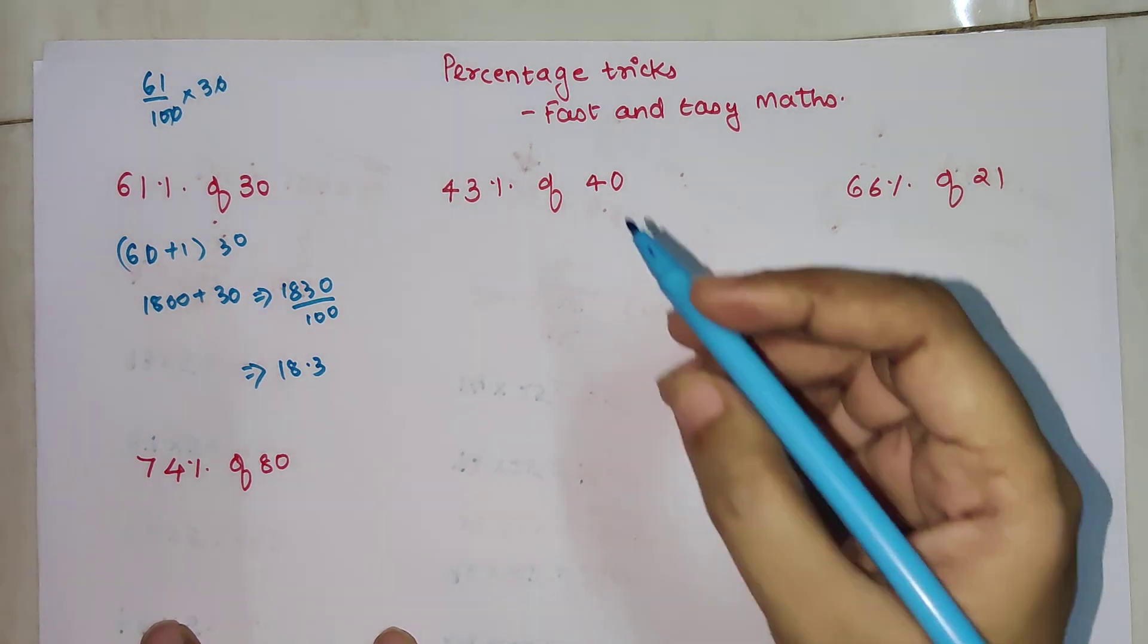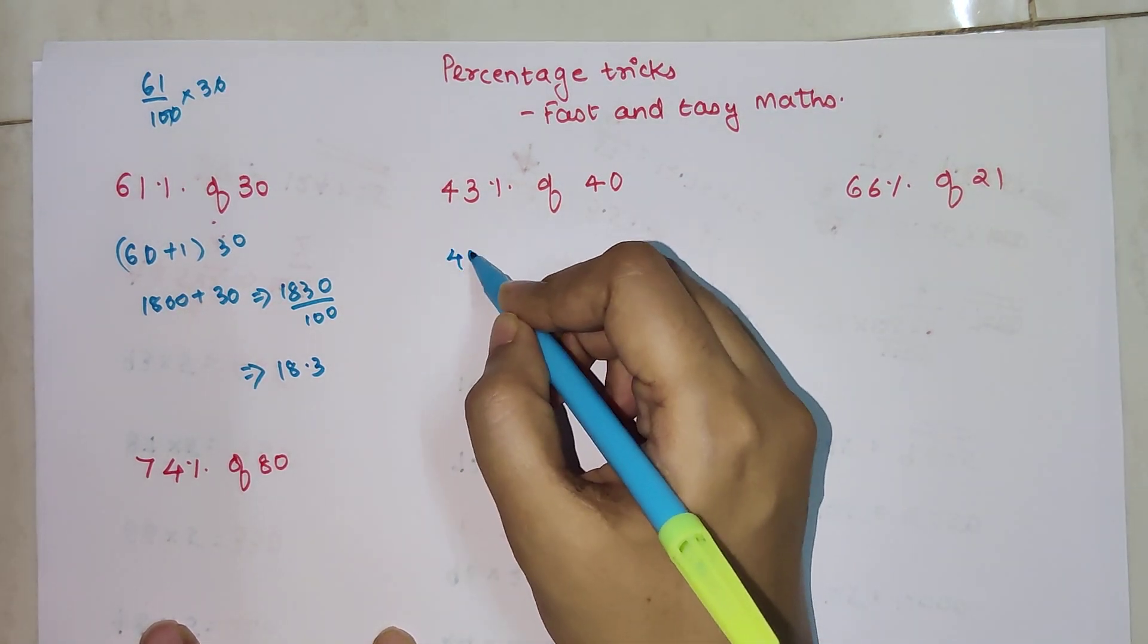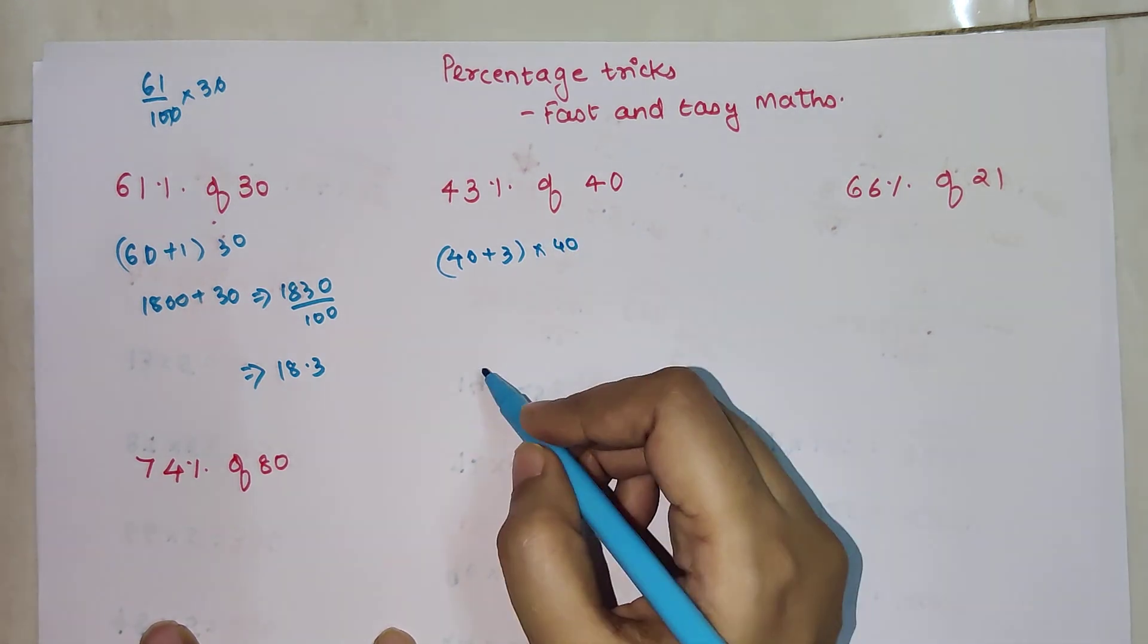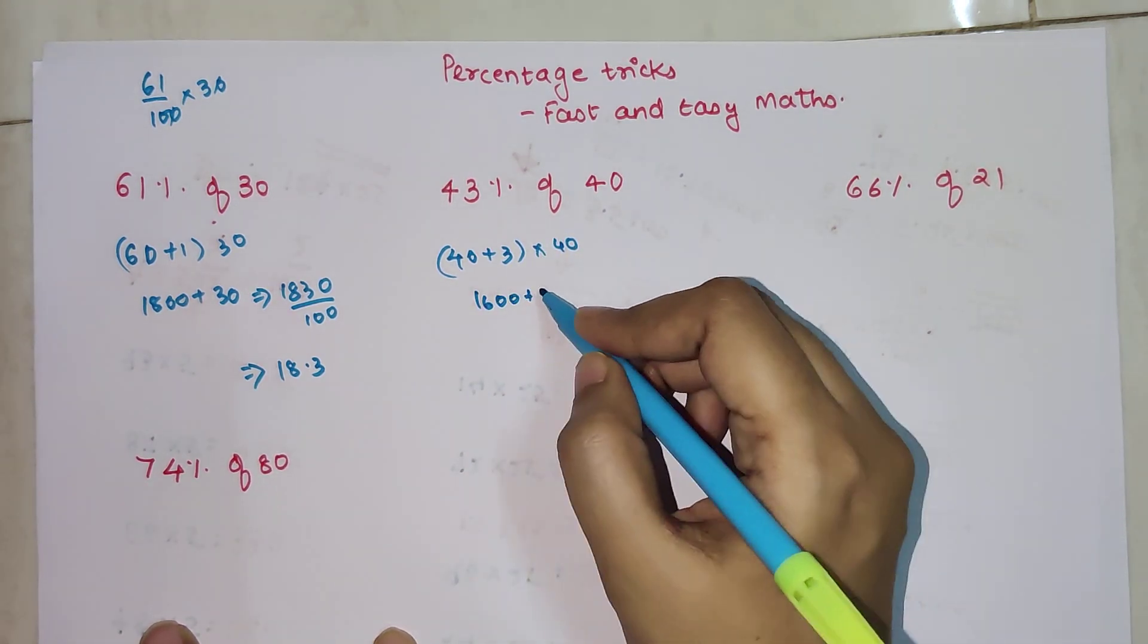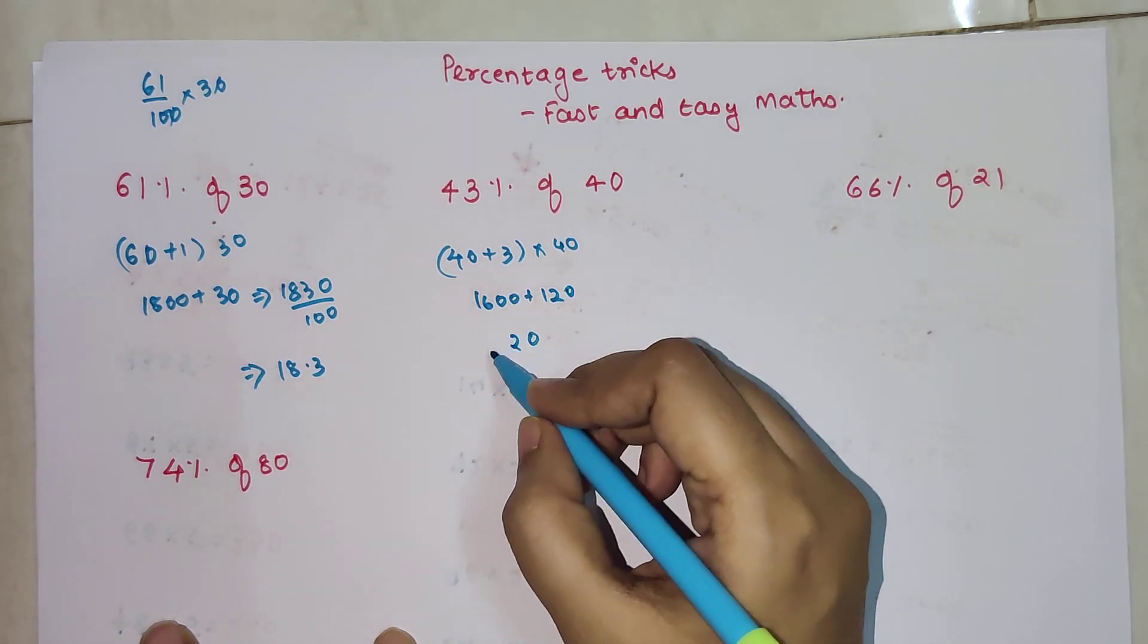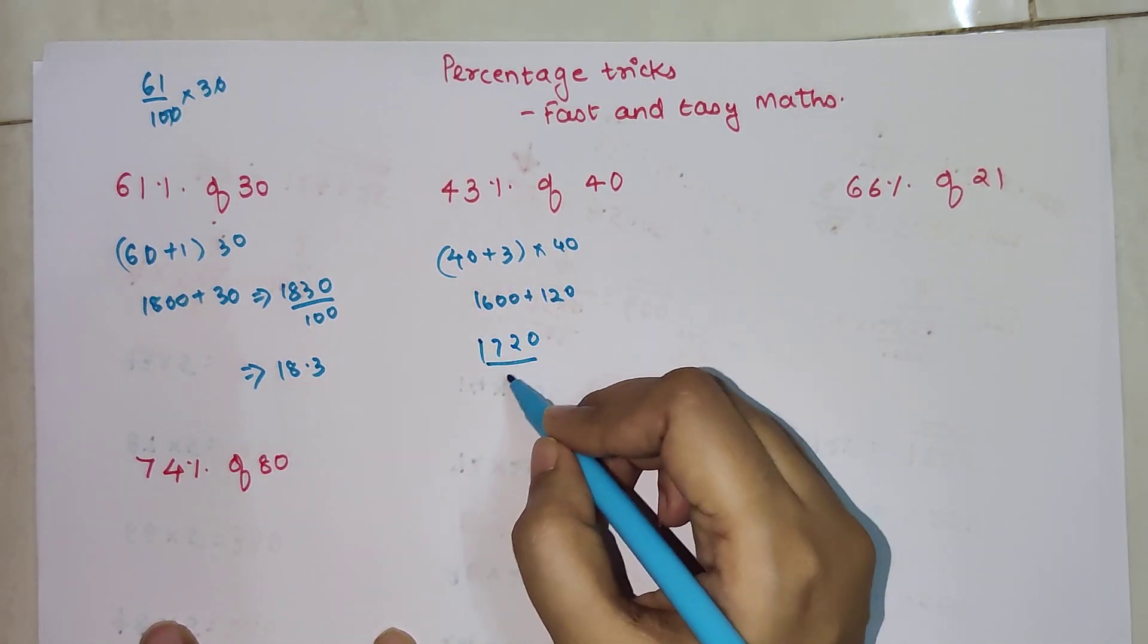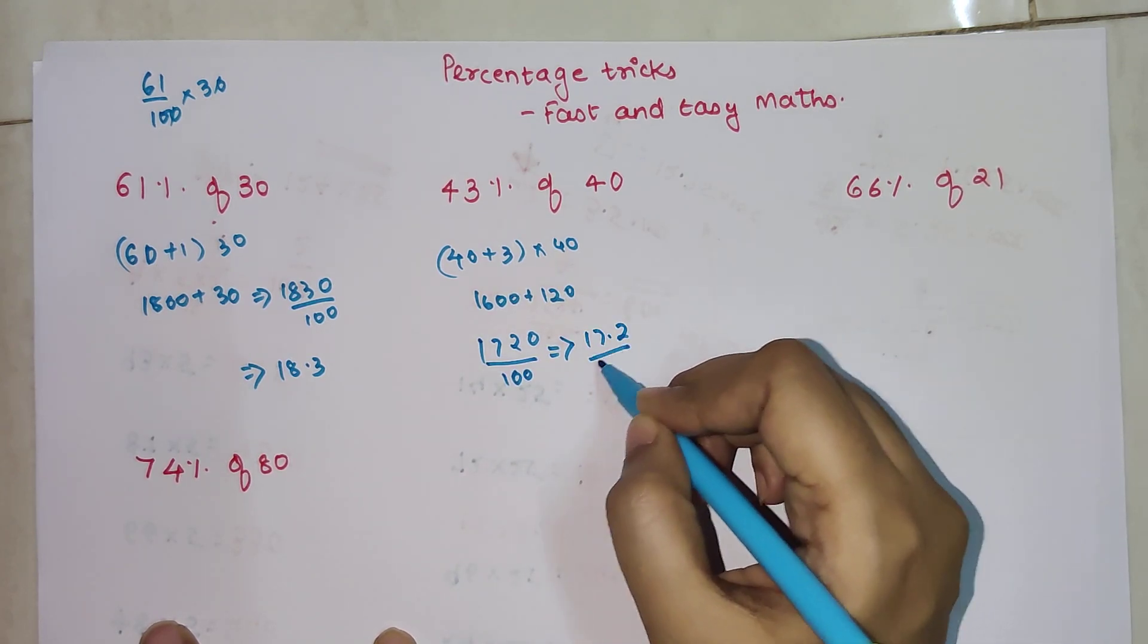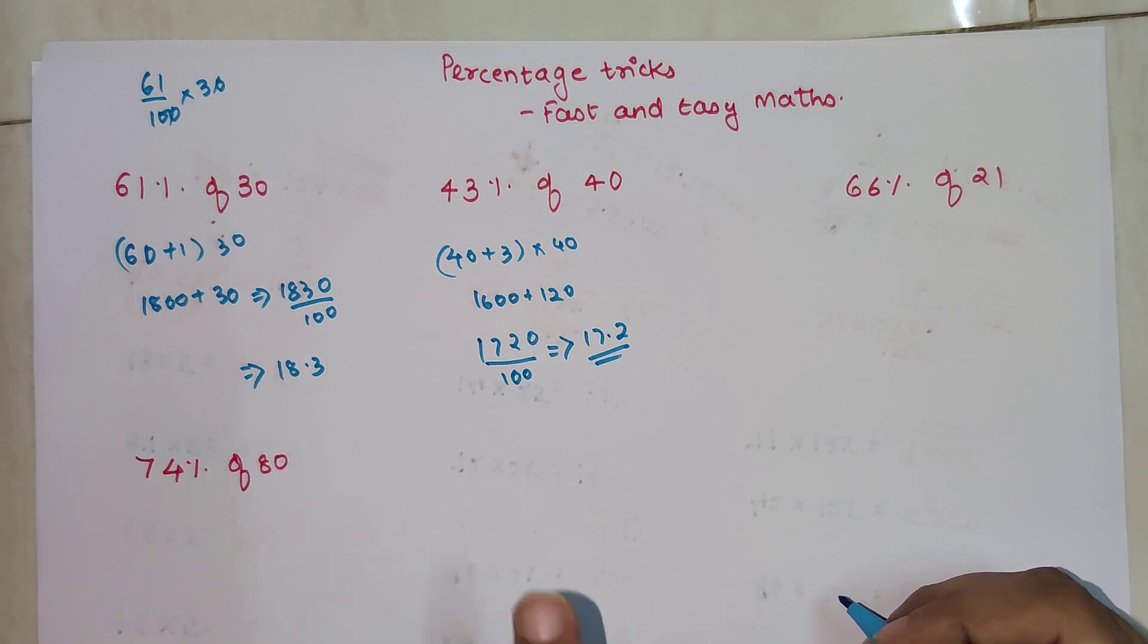Similarly, we have 40 plus 3 percent into 40. You will get 1600 plus 120, so you will get 1720 divide by 100. Your final answer is going to become 17.2.